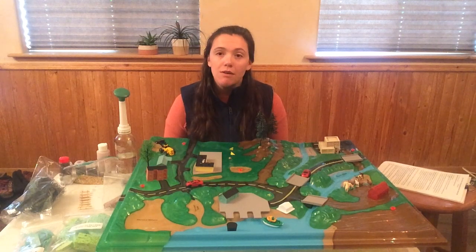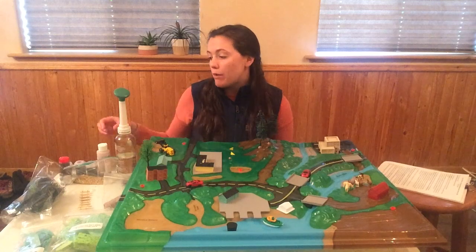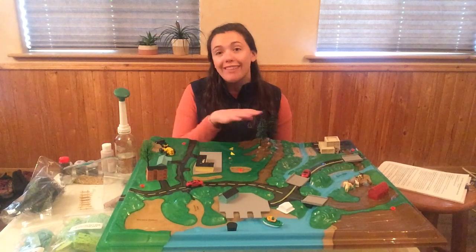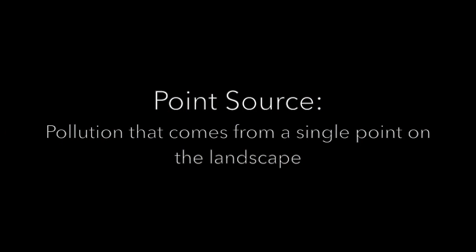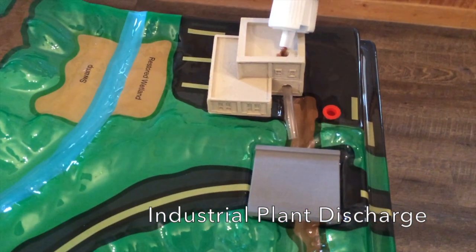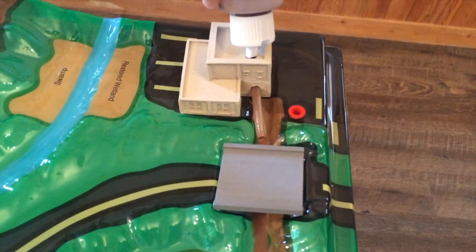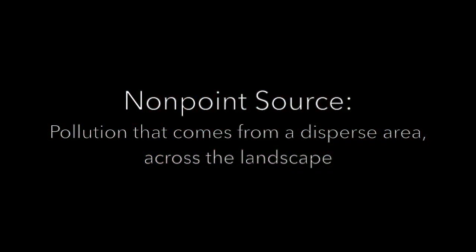There are two main sources of pollutants that I am going to be talking about. As I describe each one, I will be placing our different pollutants here on the landscape. The first type of pollution is called point source. This is pollution that comes from a single point on the landscape and it flows directly from pipes or other specific points into our waterways — so this could be an industrial plant or a factory. It's important to remember that they typically need to get a permit to allow them to discharge pollution.